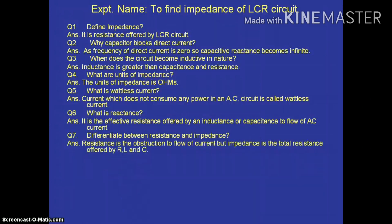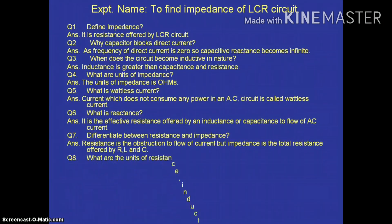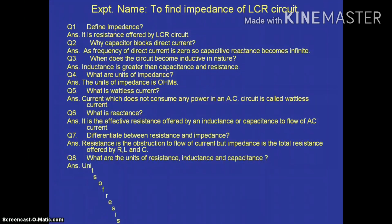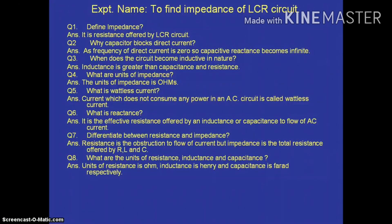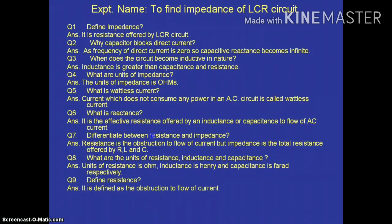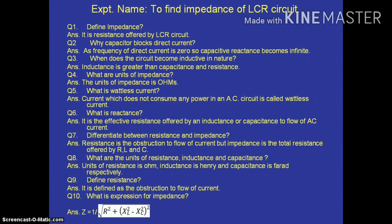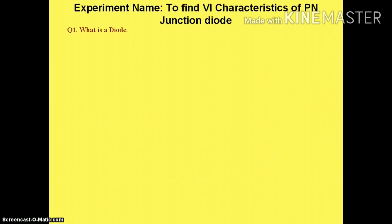Next question: differentiate between resistance and impedance. Resistance is the obstruction to the flow of current, but impedance is the total resistance offered by an RLC circuit. The units of resistance, inductance, and capacitance are ohms, henry, and farad respectively. Resistance is defined as obstruction to the flow of current. The expression for impedance is Z = √(R² + (XL - XC)²), where R is resistance, XL is inductive reactance, and XC is capacitive reactance.